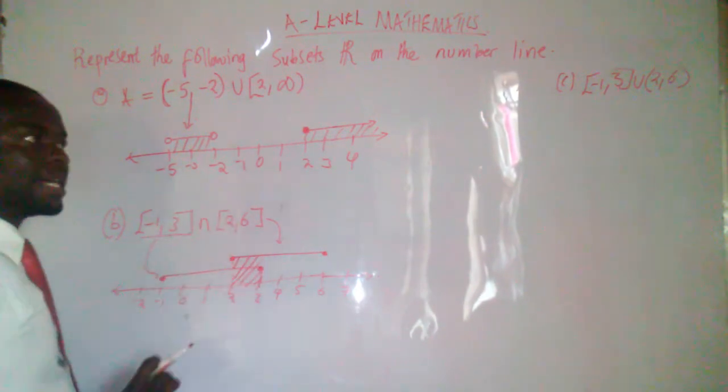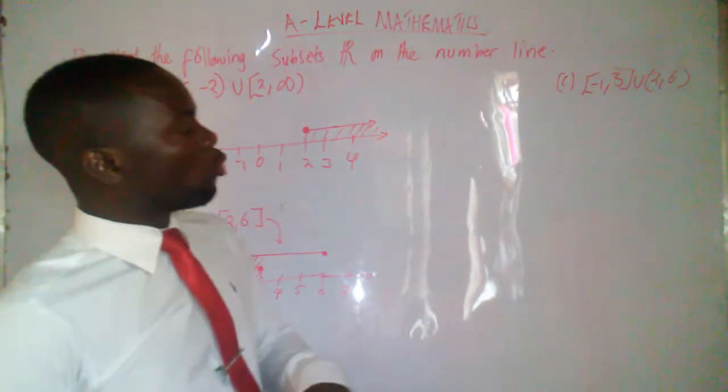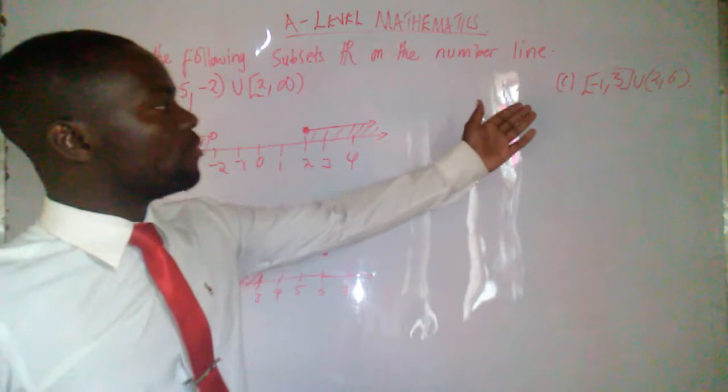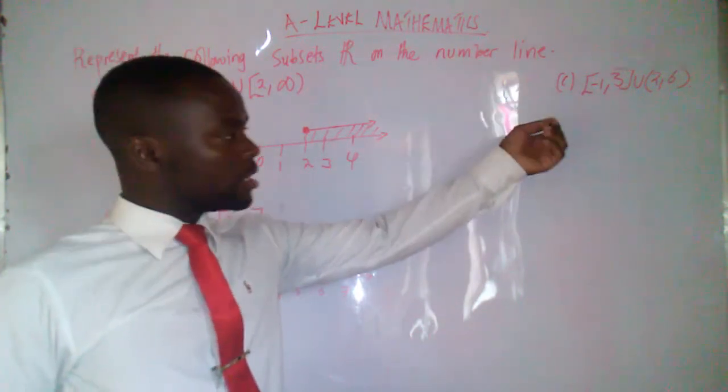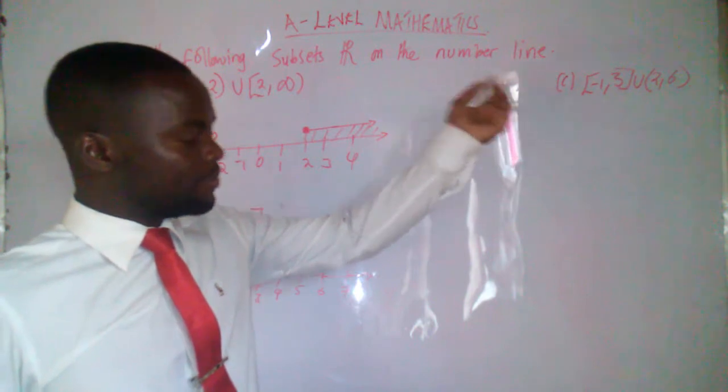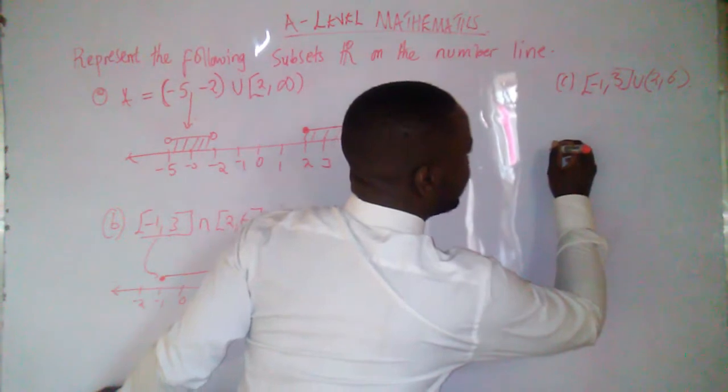This is how you must shade it. Let's go to our last question there, which is the closed interval of negative 1 and the closed interval of 3, union, the open interval of 2 and 6. So what I'll do is, let me draw a number line from here.